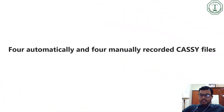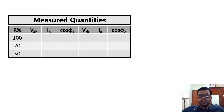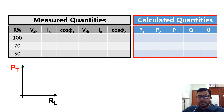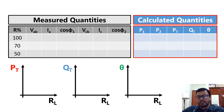From this experiment we have four automatically and four manually recorded CASC files. In each case, using the manual recording option, we recorded a data table. Using the formulas we calculate P1, P2, Pt, Qt, and theta. After calculating the required quantities, we plot Pt versus RL, Qt versus RL, and theta versus RL for each case.